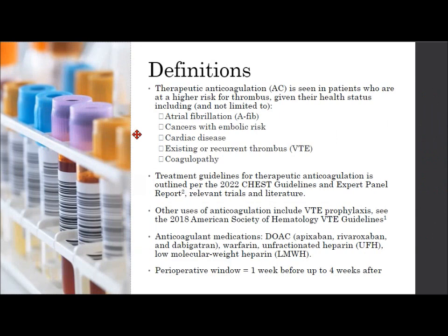The definitions: therapeutic anticoagulation is given to patients who are at a higher thrombus risk given their underlying health status. This list is not all-encompassing, but these are some of the most common patients you'll see — those with AFib, those with cancers with a high embolic risk, cardiac disease, those with an existing recurrent thrombus or VTE, and those with coagulopathy. The treatment guidelines are per CHEST. I also referenced some relevant trials and literature.